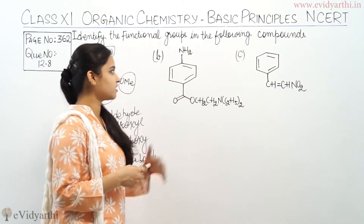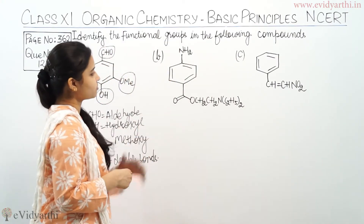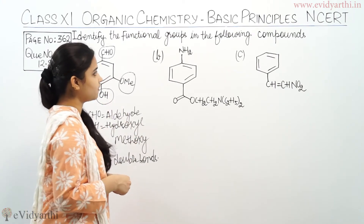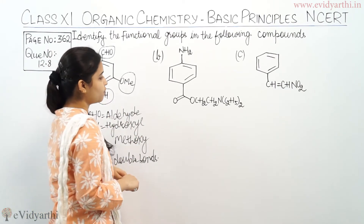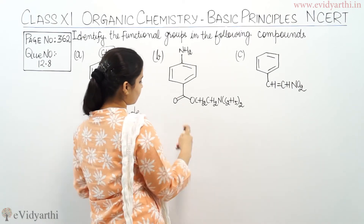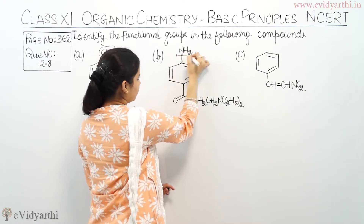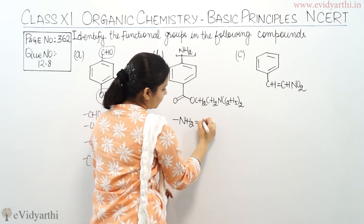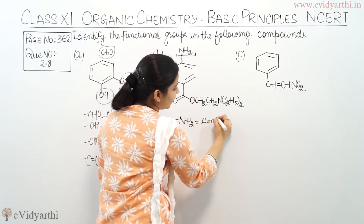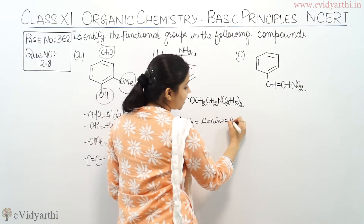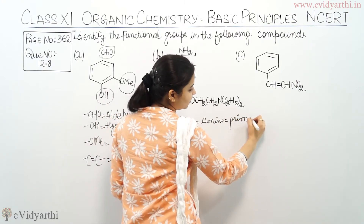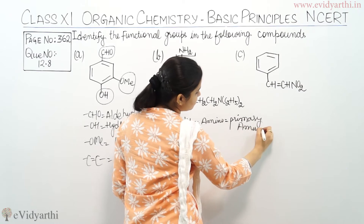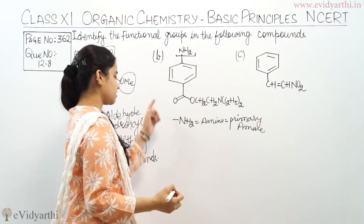Coming to the second part of this question. This is the organic compound and we need to identify its functional groups. The first functional group which I am seeing is NH2, which is amino — it is a primary amine. So this is the first functional group detected in this compound.